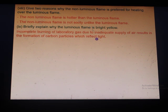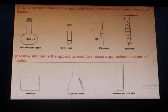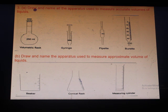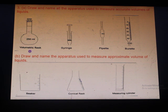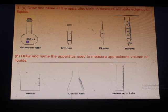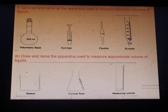Now let's look at the apparatus used in the chemistry laboratory. For measuring accurate volume of liquids: the volumetric flask, available in different sizes such as 250 ml, 1 liter, 2 liters, and 5 liters; the syringe; the pipette; and the burette.